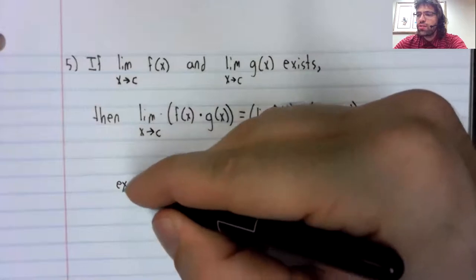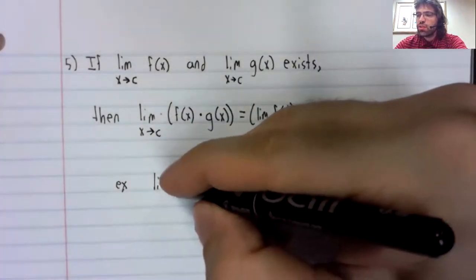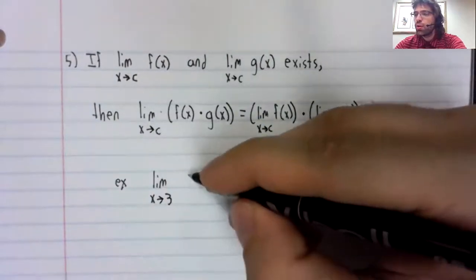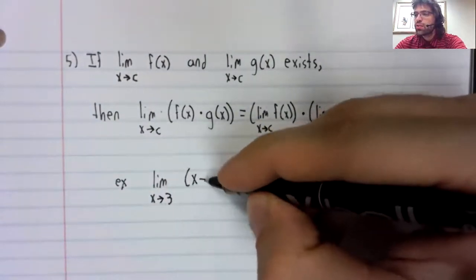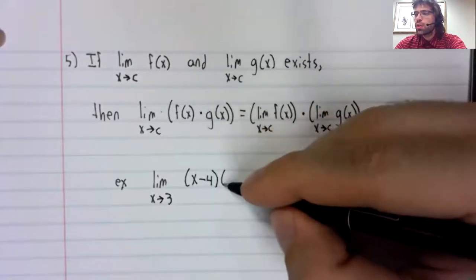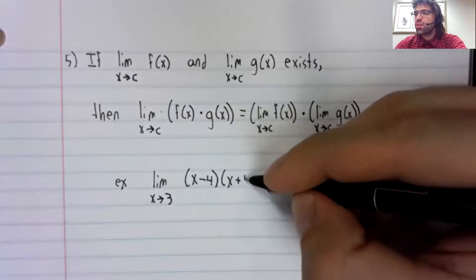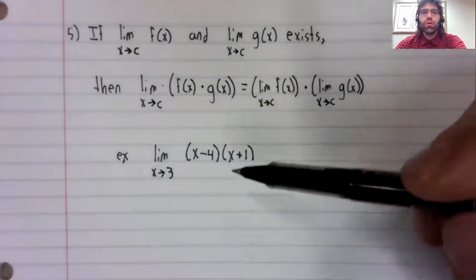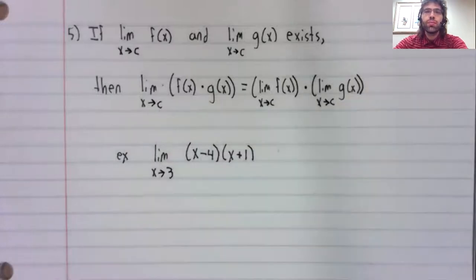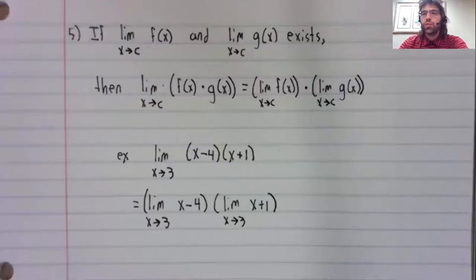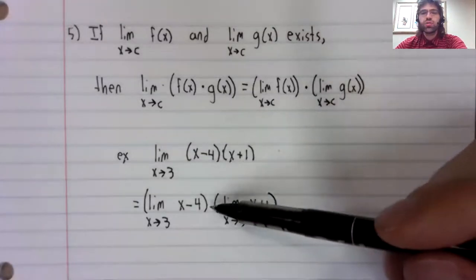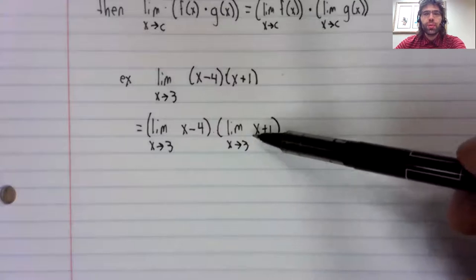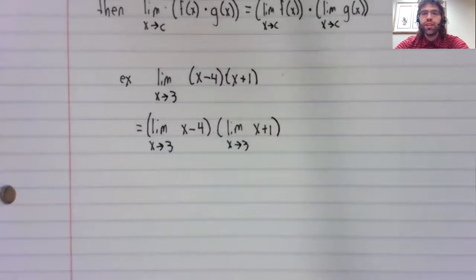In terms of examples, let's say the limit as x approaches three of x minus four times x plus one. We can use this rule to break this limit into two. Like so. The limit of a product becomes the product of the limits. And we can find each of these limits using the techniques of the previous video.